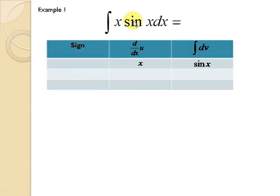So if we use the tabular method, then you will have to form a table with three columns: one column for sign, second column for U which you differentiate, and the last column is dV which you integrate.